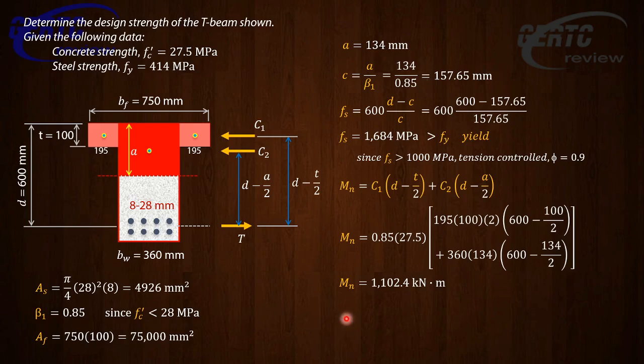Finally, the design strength. We know your reduction factor is 0.9, so the design strength is phi times Mn, and that will give you 992.2 kilonewton meters. That is your answer.